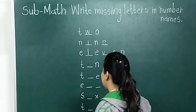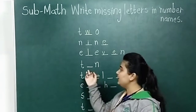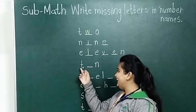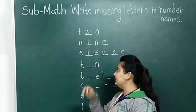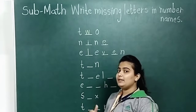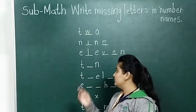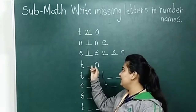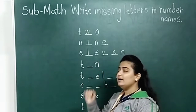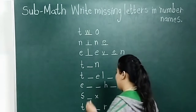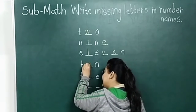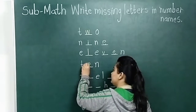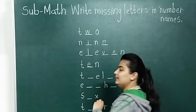Okay, now next number name. T, dash, N. Which number name is this? Ten. T is written, E is missing, so we write E. T, E, N — ten.